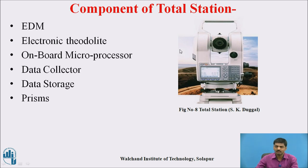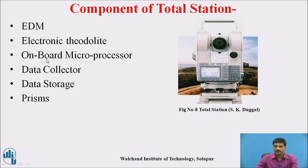Components of a Total Station — basic components just like similar to your theodolite: tripods, foot screws are present. Instead of horizontal and vertical disks, displays are present — that is the digital display. Prism, rates, ADM — that is the electronic distance meter. Electronic theodolite is present. Then onboard microprocessor — microprocessor is provided inside this. Data collector is there to collect data. Data storage system is provided inside to store input and output data. And prisms are there. By using these particular components, easily you can achieve distances, angles, and any other work.